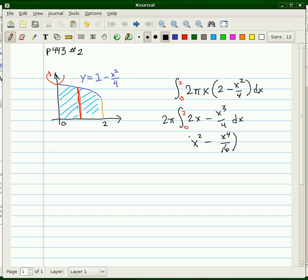We still have the 2π in there, and we're going from 0 to 2. When I plug in 0, everything's going to be gone, so I don't have to worry about that. It's 2π times 2 squared is 4 minus 2 to the 4th is 16 over 16. 4 minus 1 is 3, and so 3 times 2π is 6π.